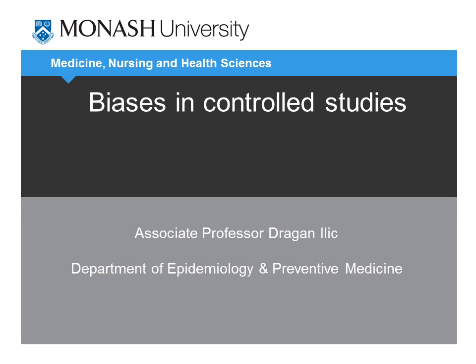Hello all and welcome to this online presentation in which we'll discuss biases in controlled studies. The four major biases that we'll focus on in this slideshow are selection, performance, attrition, and detection bias.